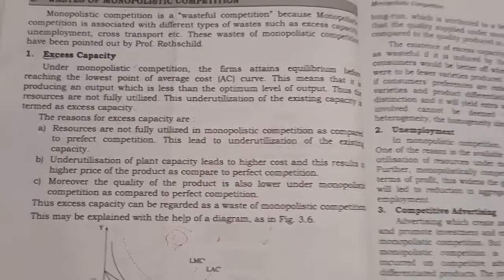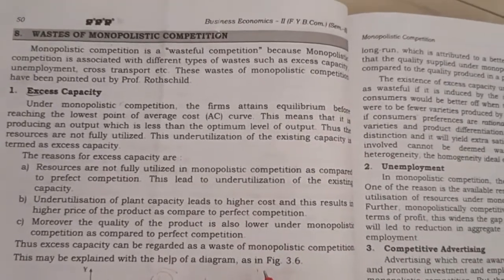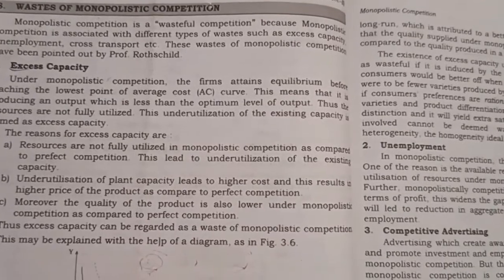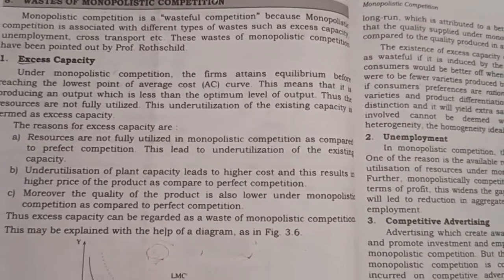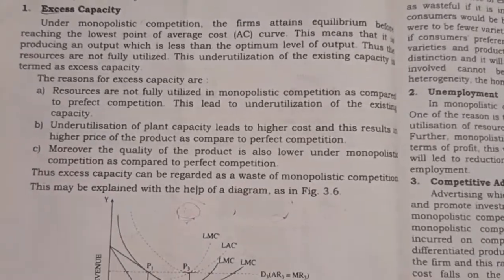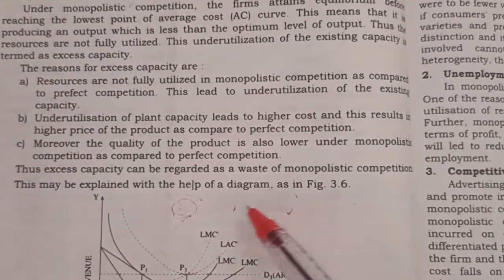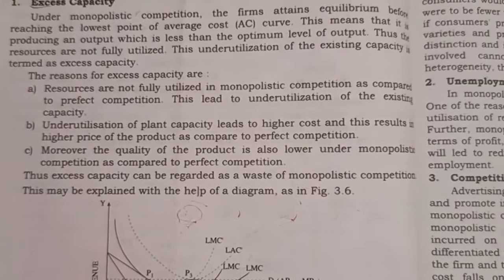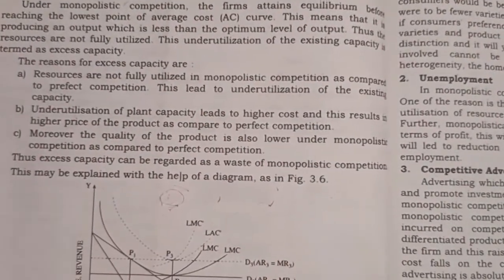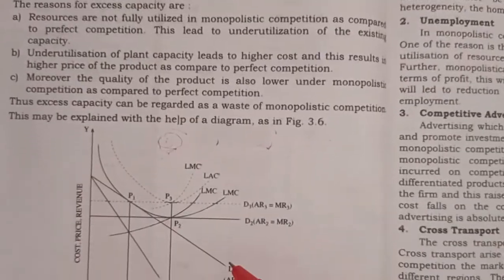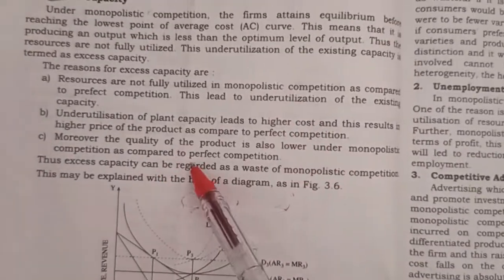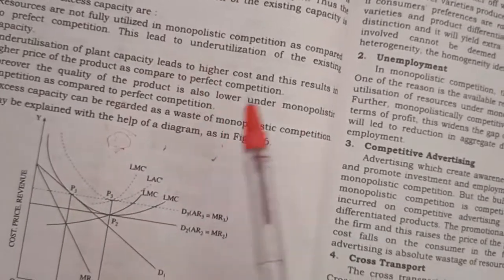If you have a thousand units of raw material going to waste without any utilization, that is again wastage. If you remember the diagram you can explain it in detail, but generally excess capacity is one of the main wastages.